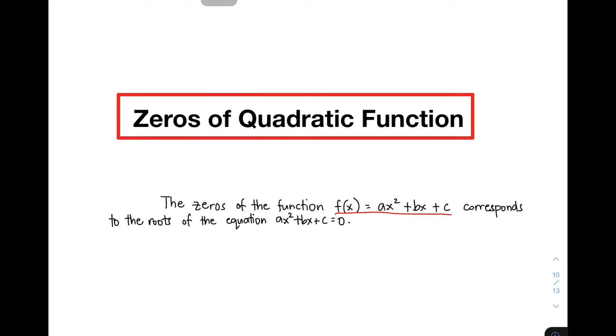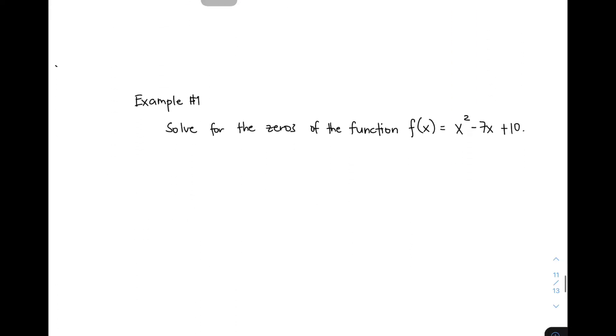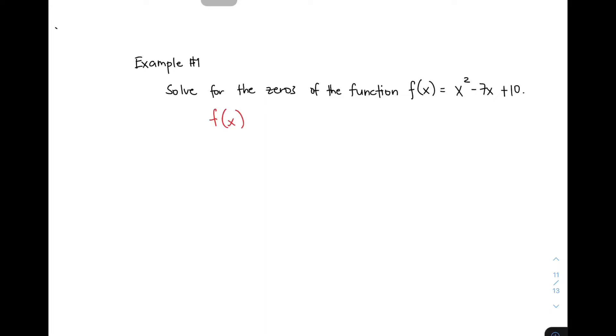So, without further ado, let's do this topic. You have here example number one. Solve for the zeros of the function f(x) = x² - 7x + 10. First, you need to copy the given quadratic function. f(x) = x² - 7x + 10.